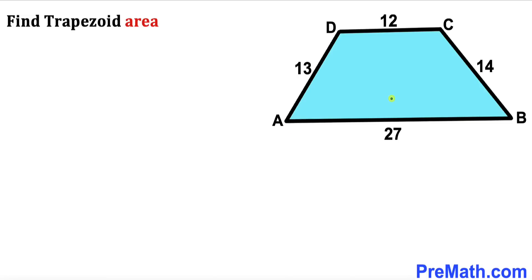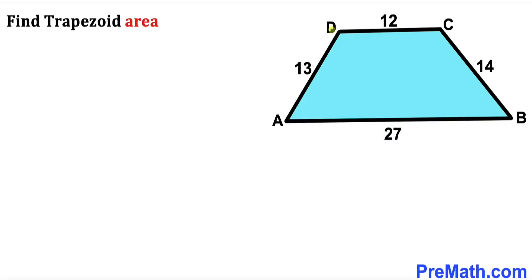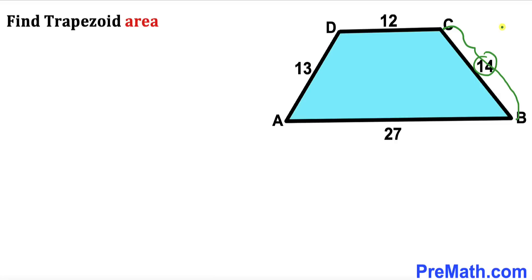In this video we have got this blue trapezoid ABCD as you can see in this diagram, such that its base AB is 27 units whereas its other base CD is 12 units. Its side length AD is 13 and finally its other side length BC is 14 units. Now our task is to calculate the area of this blue trapezoid.